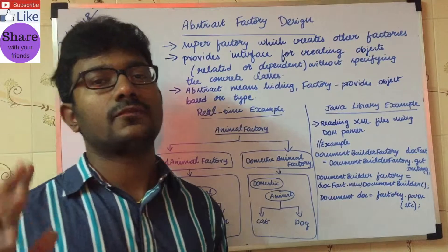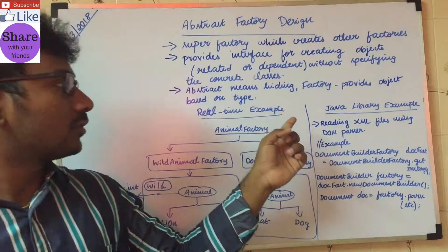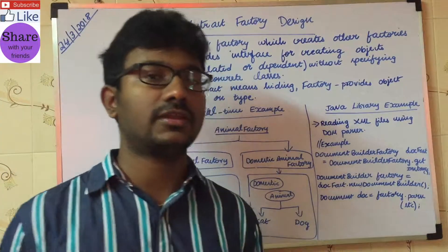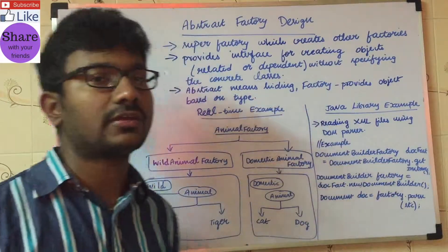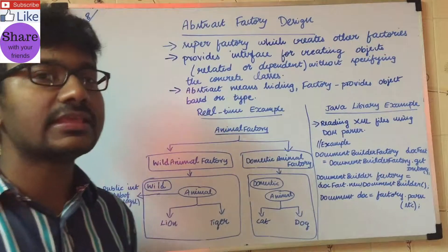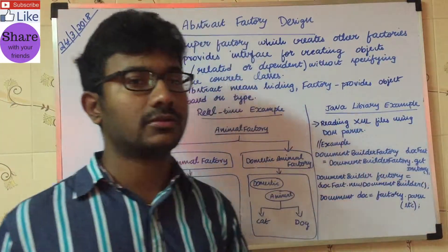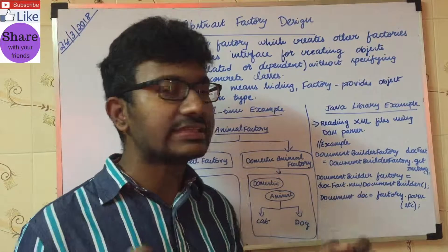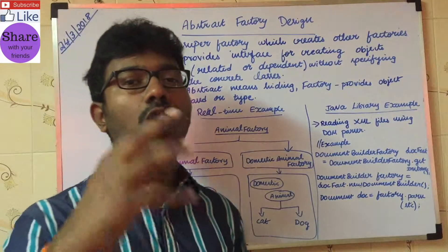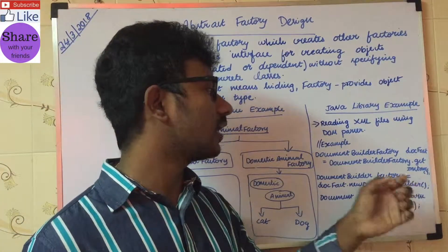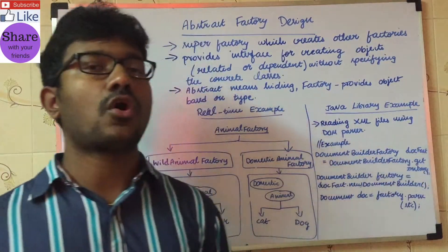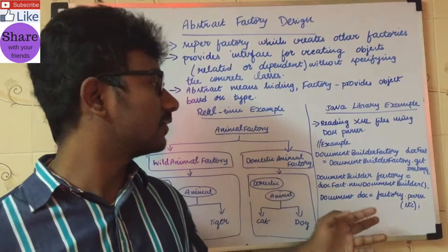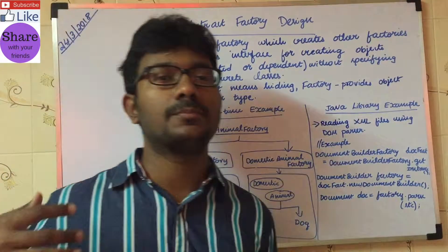The abstract factory design is actually implemented in Java libraries. For example, if you are trying to read some XML files using DOM parser, you would have used the abstract factory. DocumentBuilderFactory is an abstract factory — using this factory, you can get the actual factory object. Using that factory object, you can call methods to get the concrete objects. For example, using newDocumentBuilder() and getting the concrete object, we can then call any number of operations using it. This is a real-time code snippet where abstract factory design was implemented in Java.